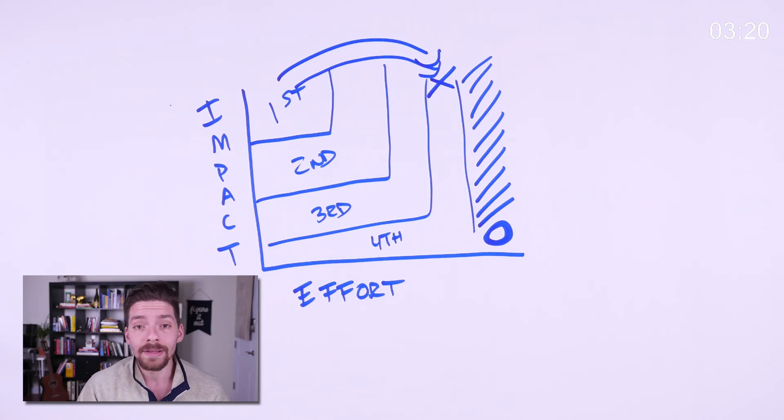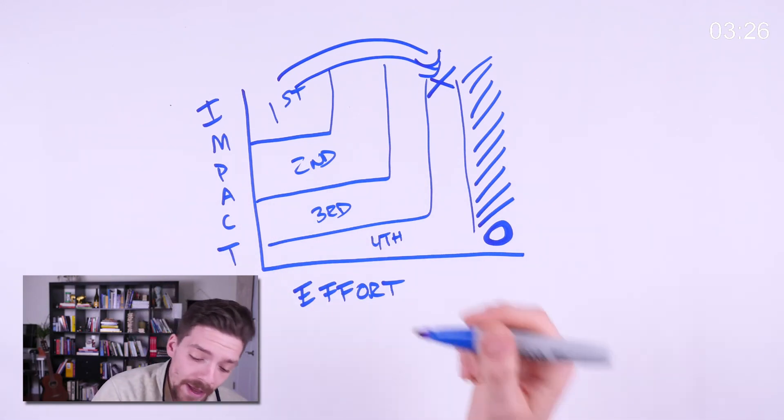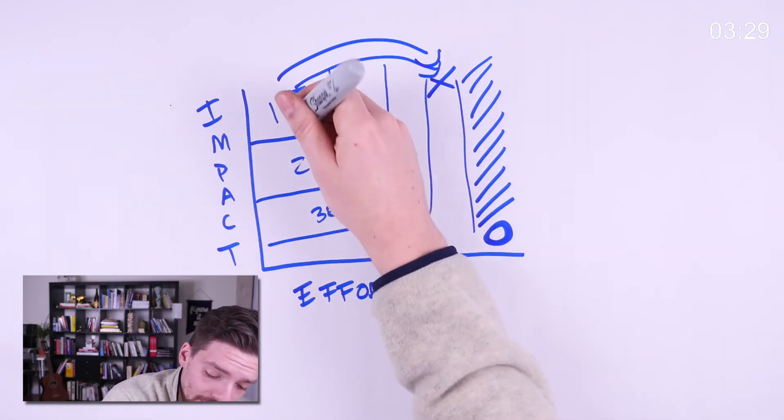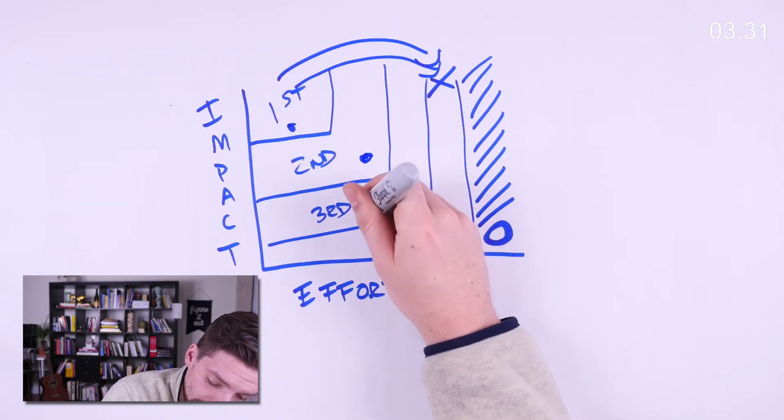So this is a really great schema or template for prioritization. You can draw this graph as many times as you want. And then as you have things to prioritize, plot them on the graph like this.